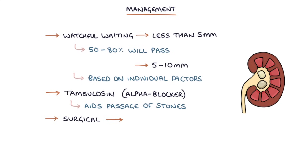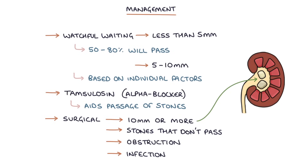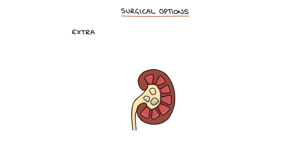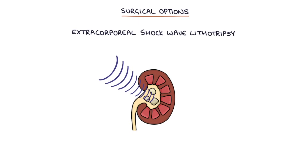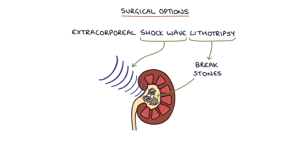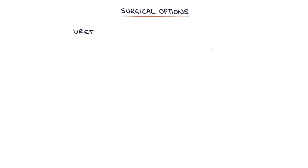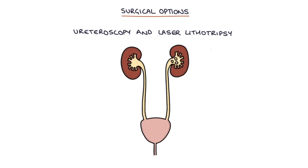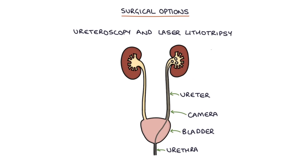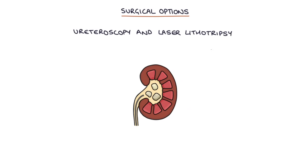Surgical interventions are required for large stones — for example 10mm or more — and also for stones that don't pass spontaneously, or where there's complete obstruction or infection. Extracorporeal shockwave lithotripsy (ESWL) involves an external machine that generates shockwaves directed at the stones under x-ray guidance, breaking them into smaller parts that are easier to pass. Ureteroscopy and laser lithotripsy involves a camera inserted via the urethra, bladder and ureter to identify the stone, which is then broken up using targeted lasers.